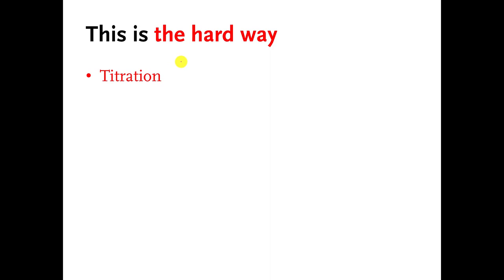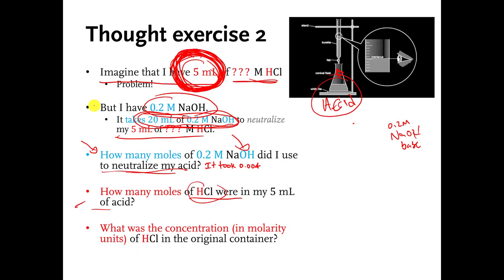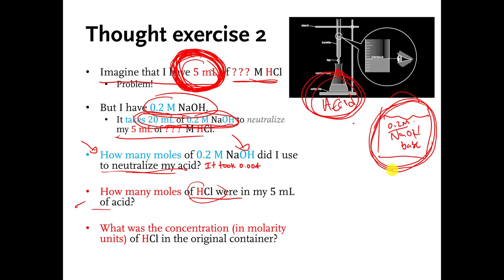The procedure I just described is called a titration. Titration means using something you know the concentration of to figure out the concentration of something else you don't know. There are many different kinds of titrations; the one we're doing today is called an acid-base titration. In thought exercise two, we knew the concentration of the base (0.2 molar), didn't know the acid concentration, then used the base to figure it out.